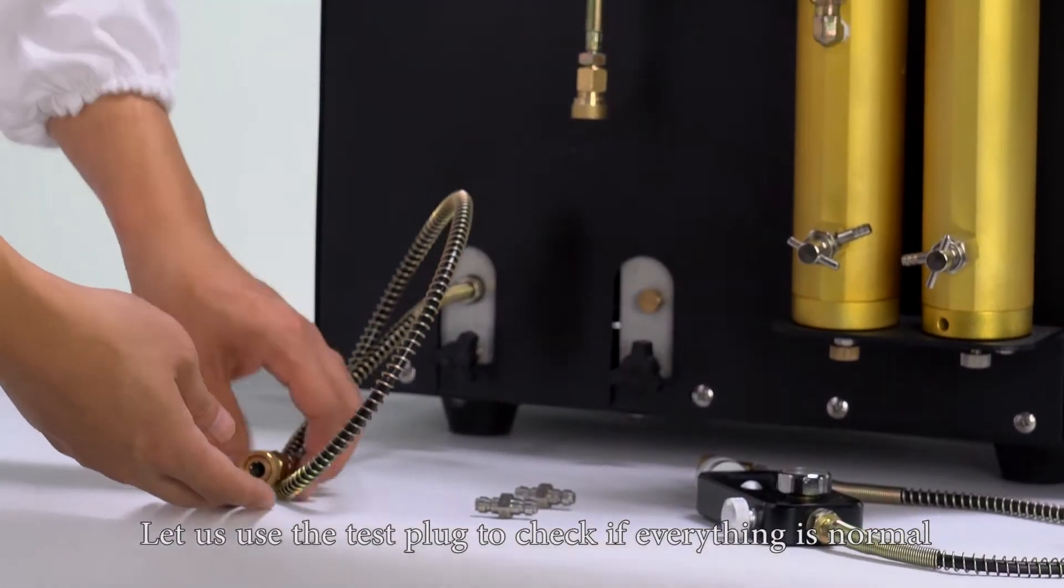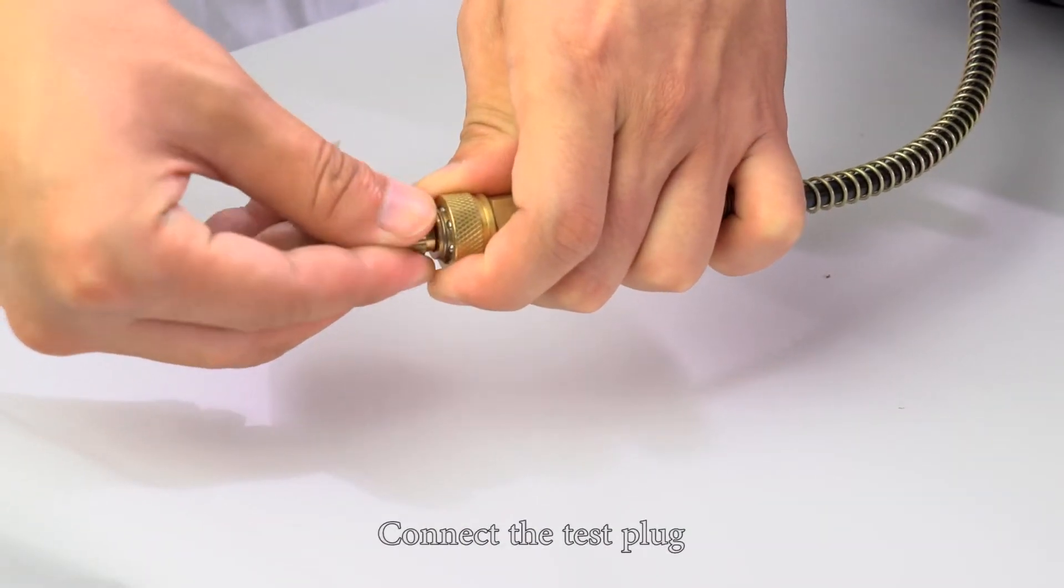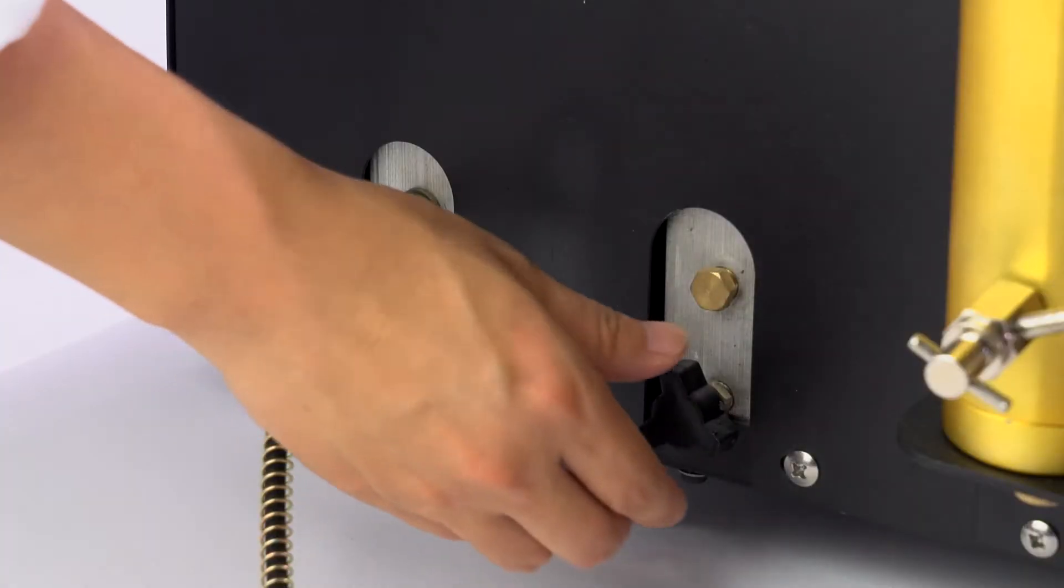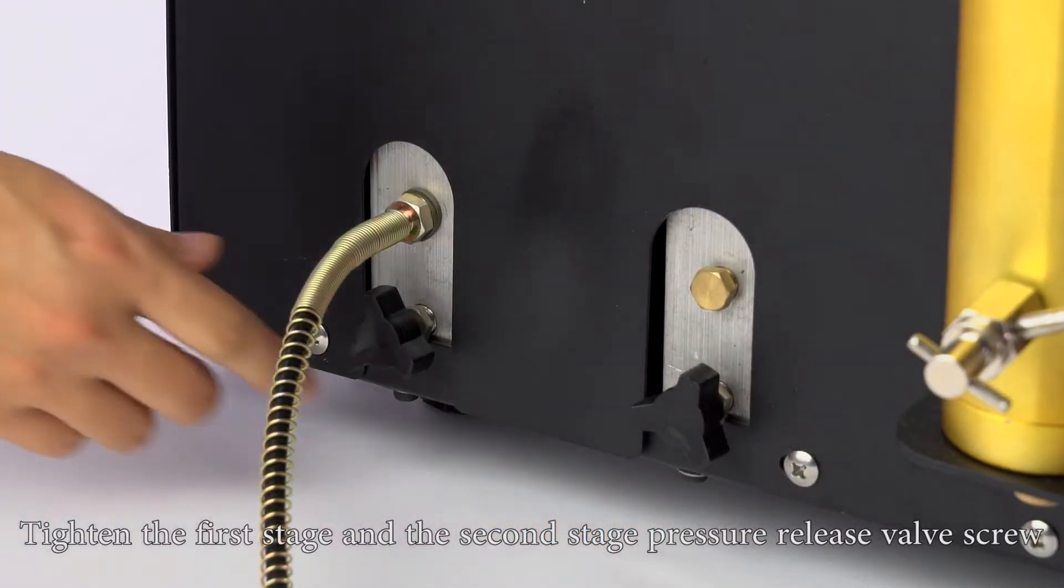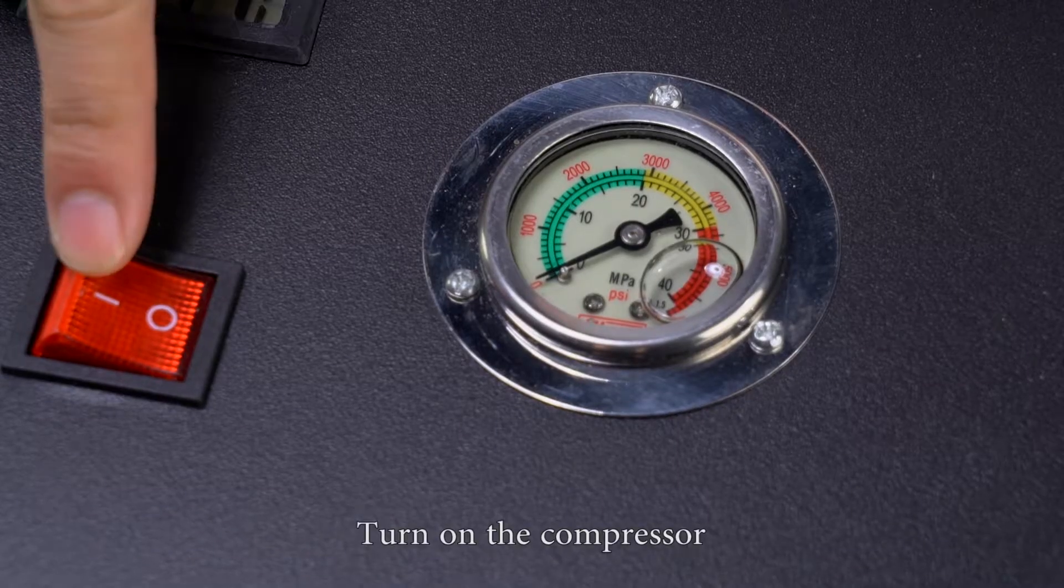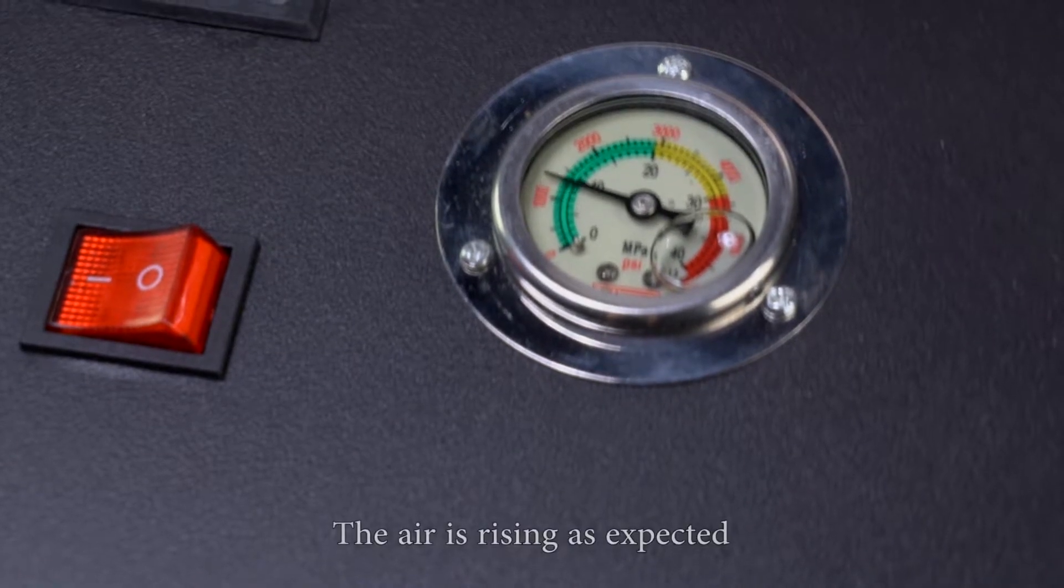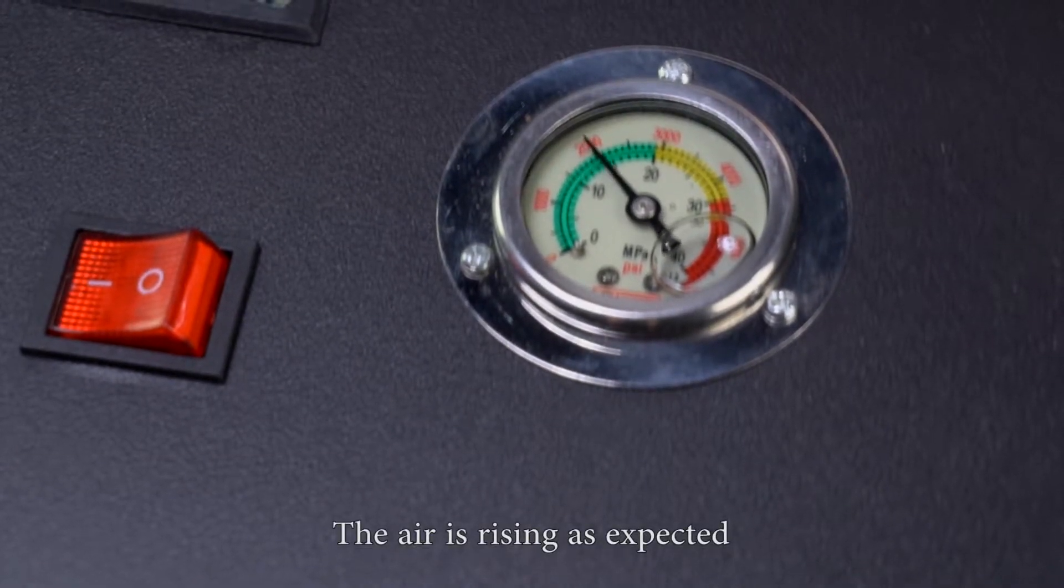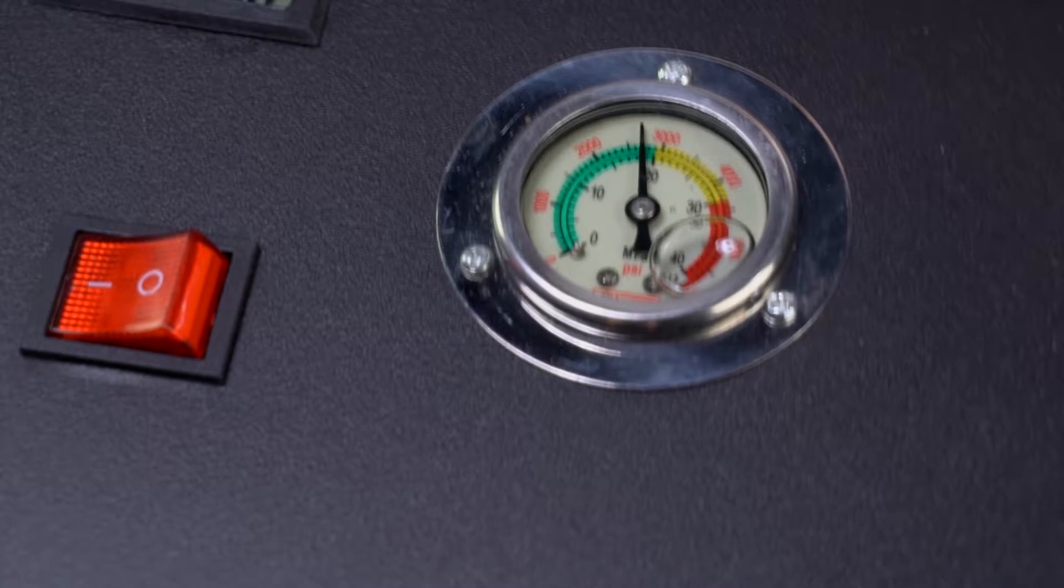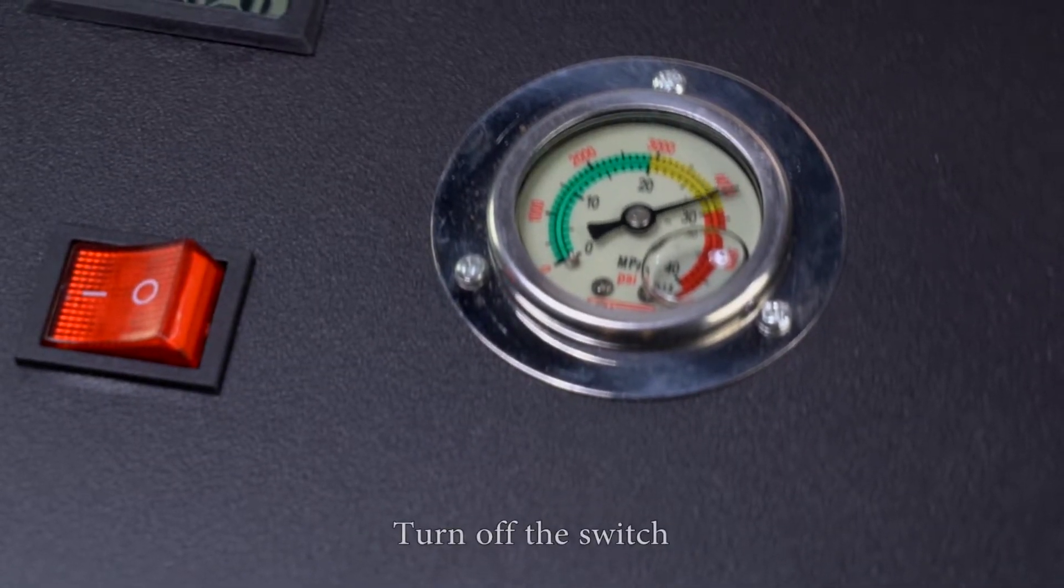Let us use the test plug to check if everything is normal. Connect the test plug. Loosen the first stage and the second stage pressure release valve screw. Turn on the compressor. The air is rising as expected. When it reaches 4500 psi, turn off the switch.